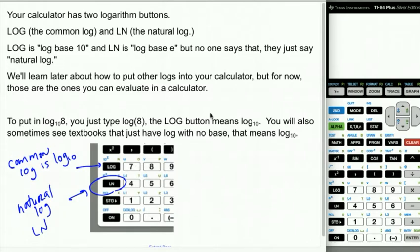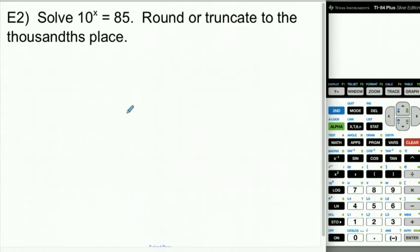We're going to learn how to put other logs in your calculator, but for right now, you're only going to know how to put those in. So for instance, if you wanted log base 10 of 8, you're just going to type log 8. You don't need the 10 part because that's what the log button means. The log button means log base 10.